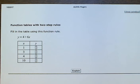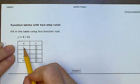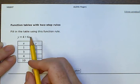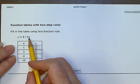Function tables with two-step rules. Fill in the table using this function rule, y equals 4 plus 6x. So we are going to just substitute in our x value into this function and get out a y answer.